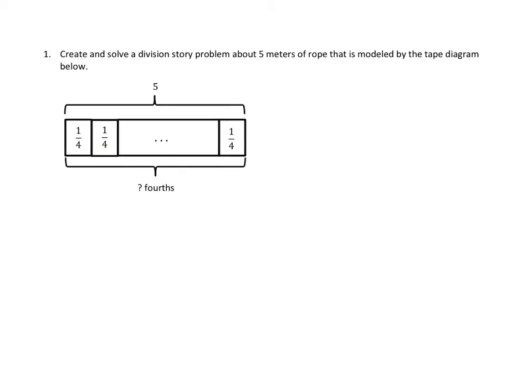So let's set up our expression. We have 5 and that's being divided into fourths. So how many fourths are in 5? Well we know that there are 4 fourths in each one so we have 5 ones. So 5 times 4 equals 20.